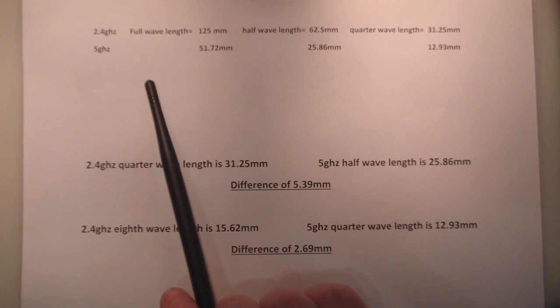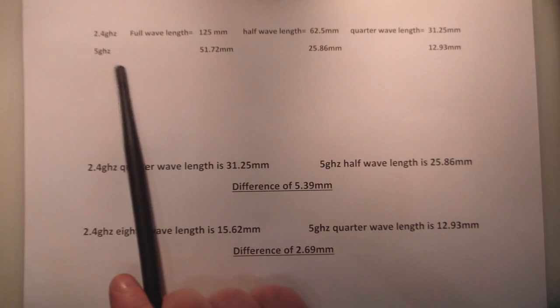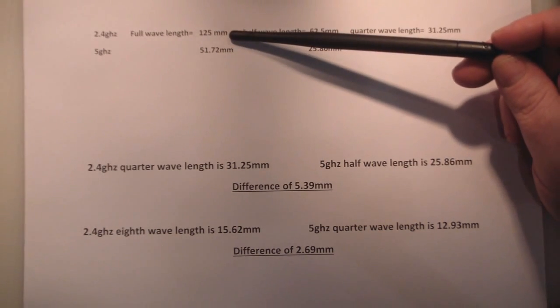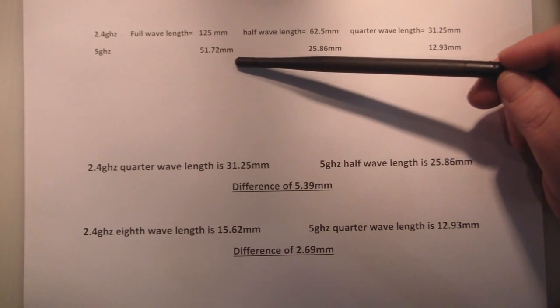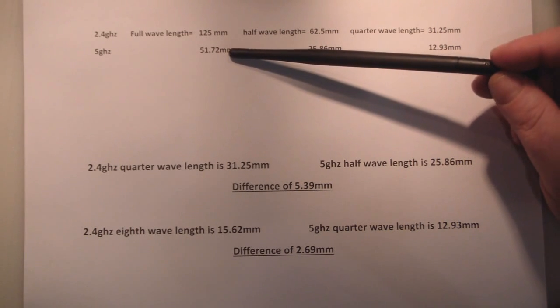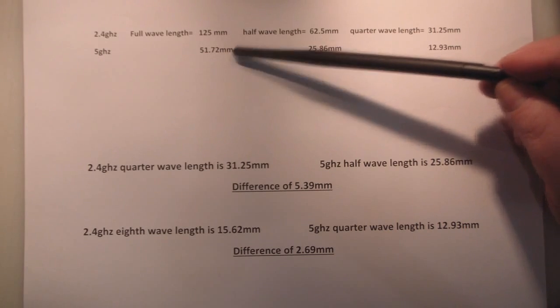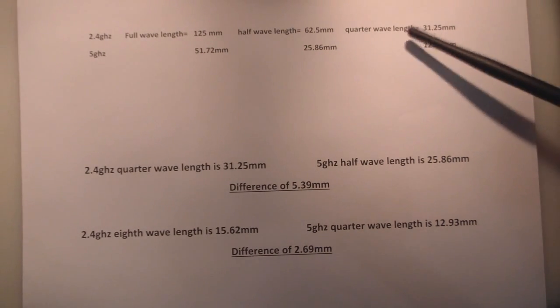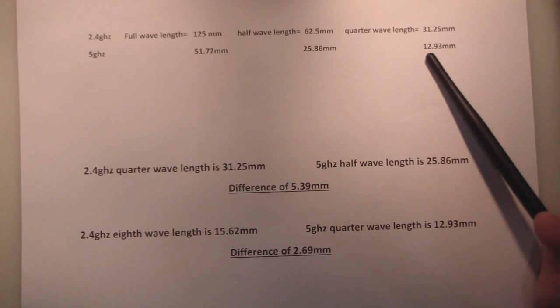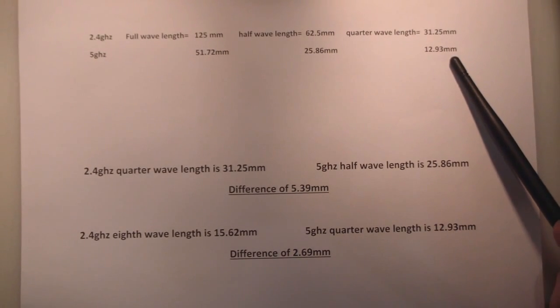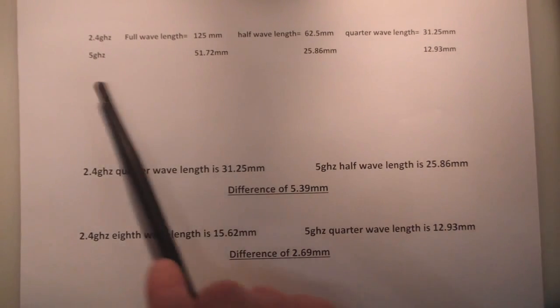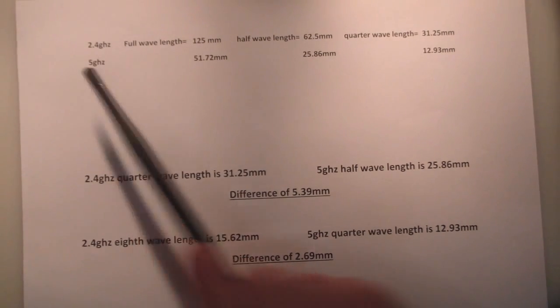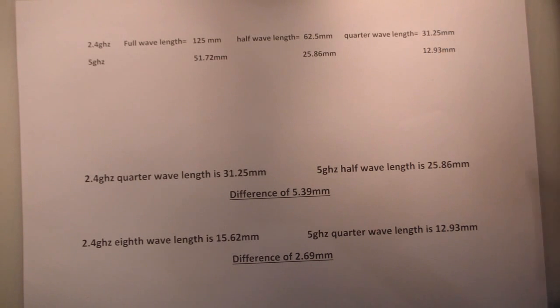So to just compare measurements for the wavelength of both 2.4GHz and 5GHz, a full wavelength at 2.4GHz is 125mm but it is only 51.72mm at 5GHz. So it is nowhere near half. And we have got half wave here and a quarter wave there. So even at a quarter wavelength you have got 12.93mm for a quarter wavelength at 5GHz and it is 31.25mm for 2.4GHz. That is a big difference.